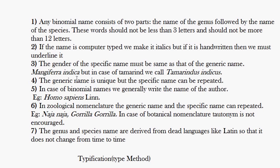The specific names are the same for both scientific names, but the genus names are different. If two organisms belong to the same species, they must belong to the same genus. Here the species name is the same but the genus name is different — that is because of the rule that the generic name is unique but the specific name can be repeated.